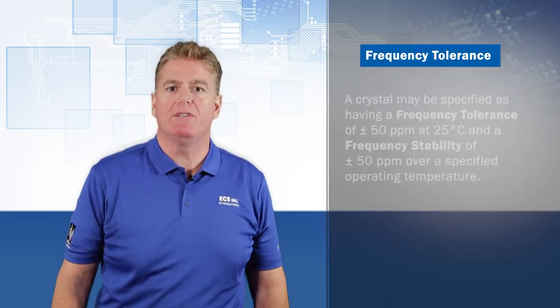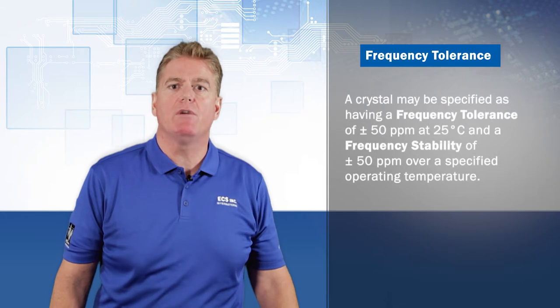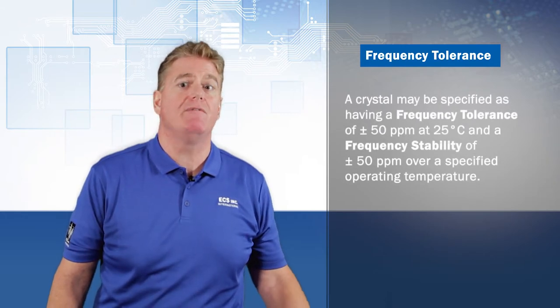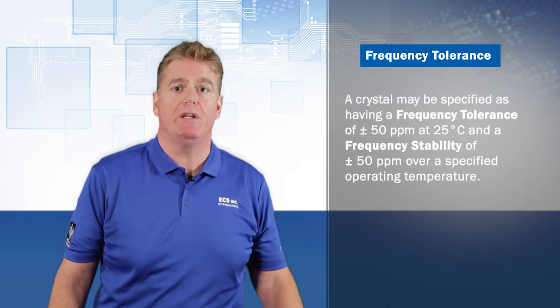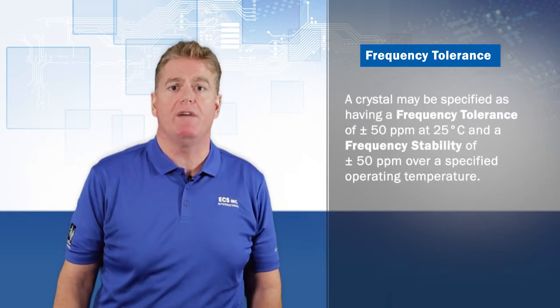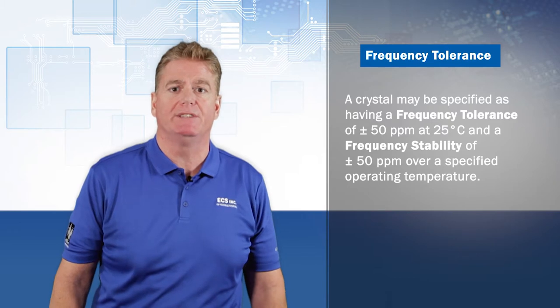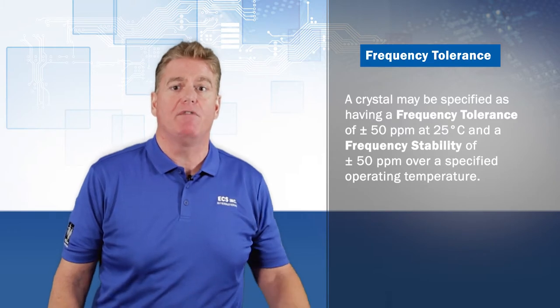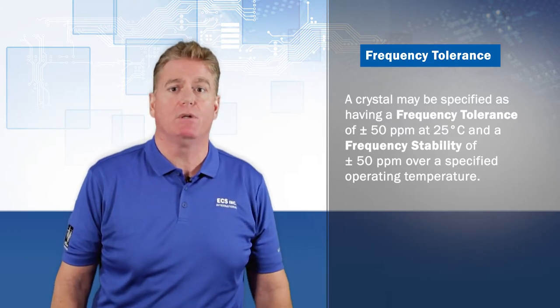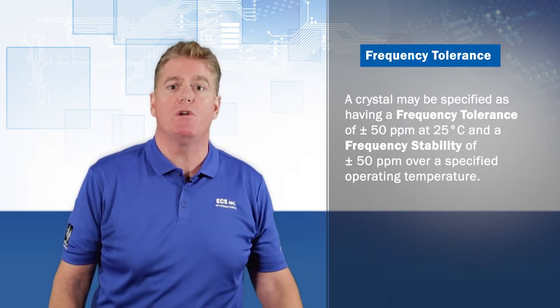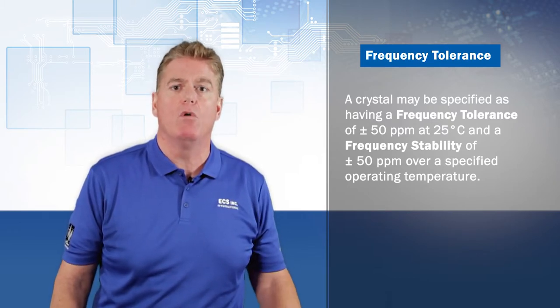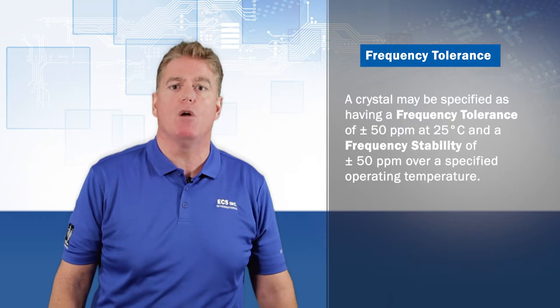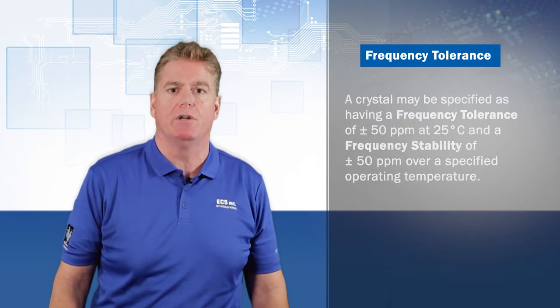For instance, a crystal may be specified as having a frequency tolerance of plus and minus 50 parts per million at 25 degrees Celsius, and a frequency stability of plus or minus 50 parts per million over a specified operating temperature.